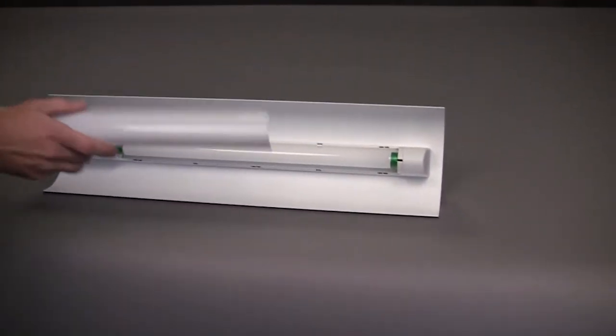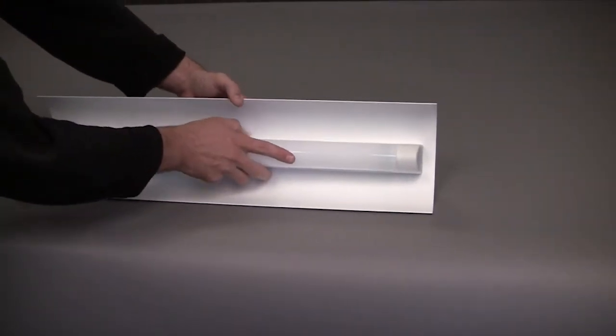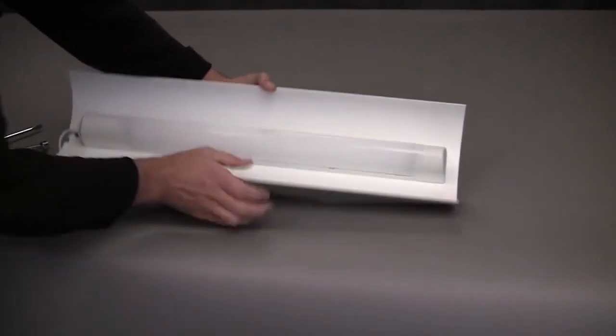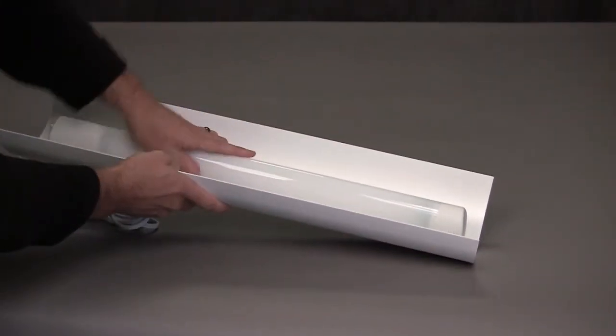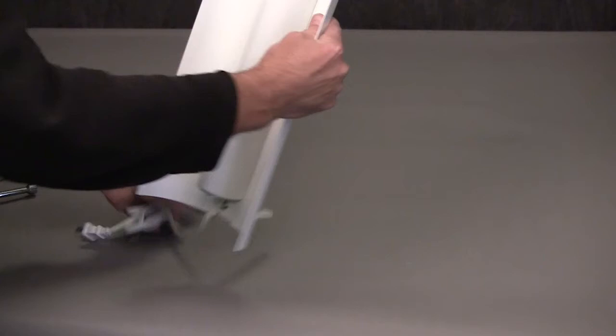Then we're going to replace the diffuser. Just line up the little holes with the tabs, being careful not to break one off. If one breaks off, it's not a huge deal. It just kind of snaps into place. And there it is. AL1 accent light is completely set up.